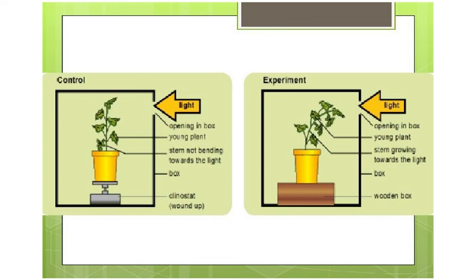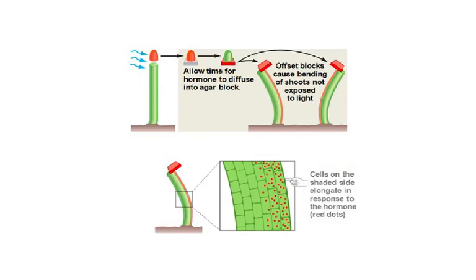Please remember: C for clinostat, C for control. The clinostat rotates four times an hour so all sides of the plant get light uniformly. Another experiment that may come up in MCQs: we remove the tip, place the tip on an agar block, and let the auxin — the growth substance — diffuse into it. Then we place the block on one side. You see how cells on the shaded side elongate in response to the auxin. There is more cell elongation on the side on which the agar block is placed, because the auxin has diffused from the tip into the agar block.